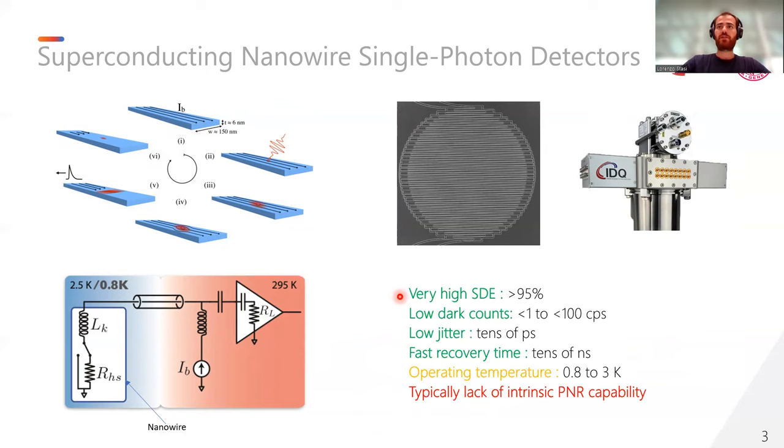SNSPDs have been proved to possess very high efficiency and low dark count rate comparable to TES detectors, but they outperform them both in terms of jitter, only tens of picoseconds, and faster recovery time, only tens of nanoseconds. Furthermore, the operating temperature is much higher, therefore the complexity of the cryogenic system is strongly reduced. However, single SNSPDs do not possess the same PNR capability that TES does.